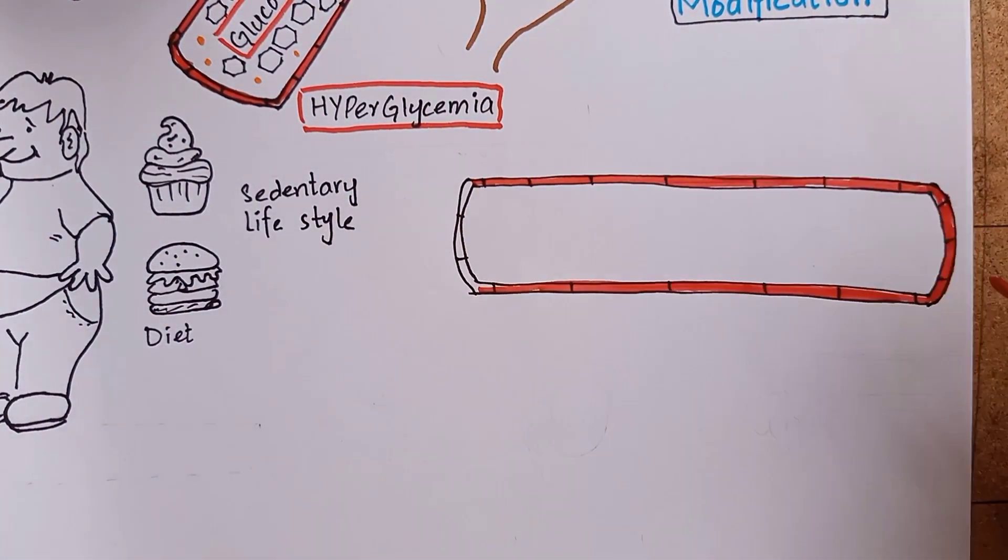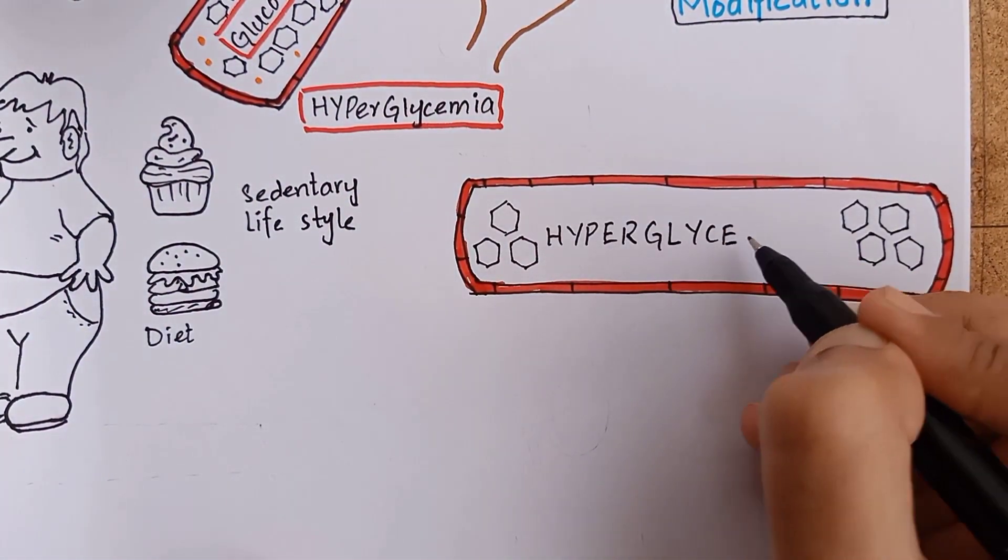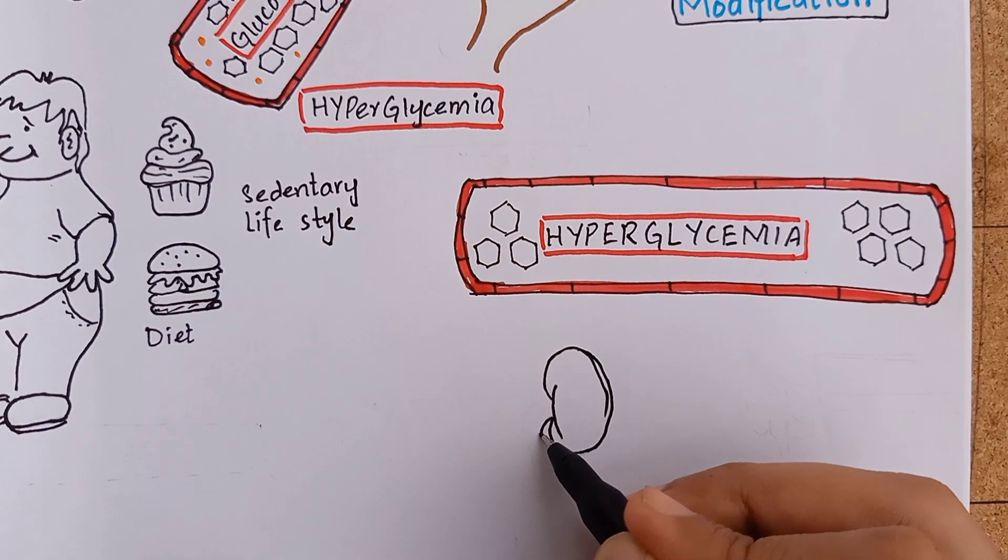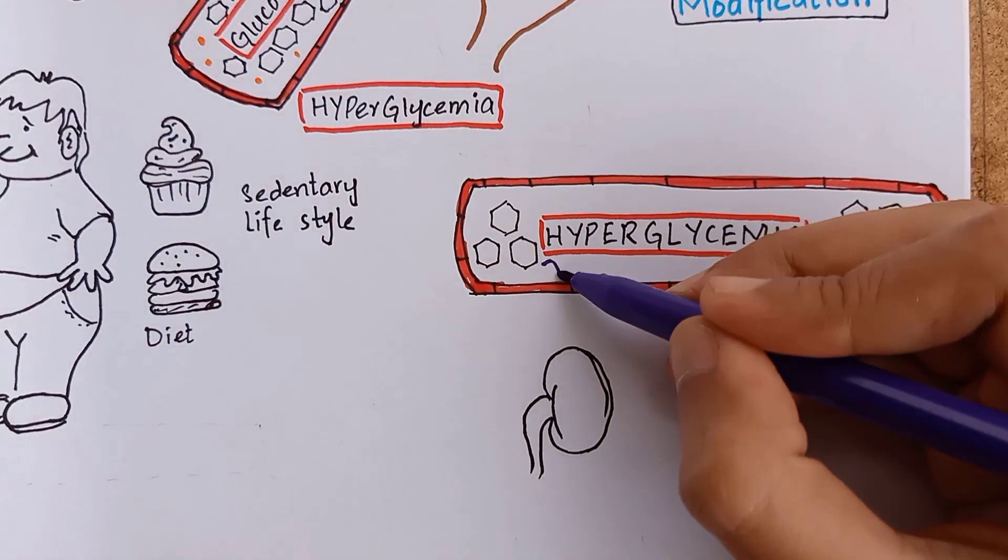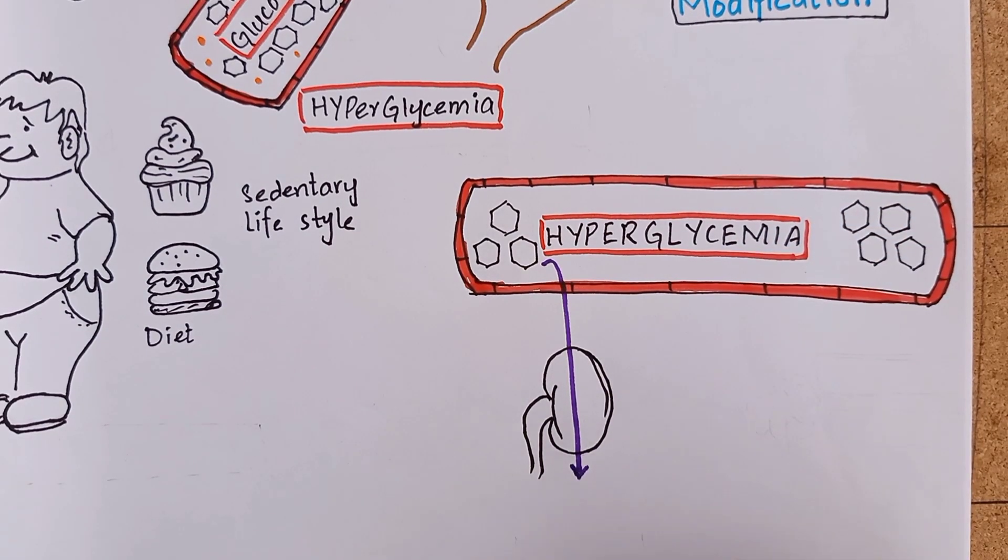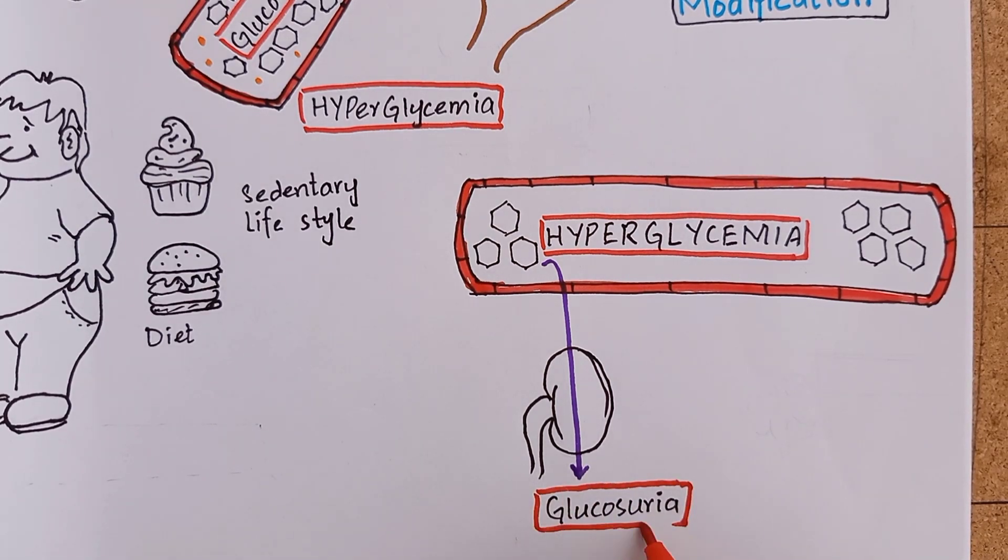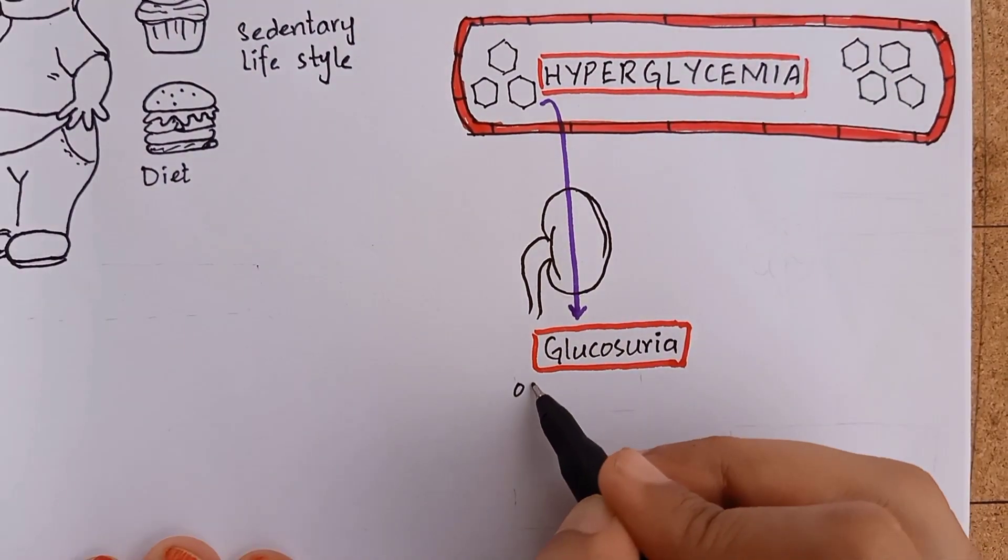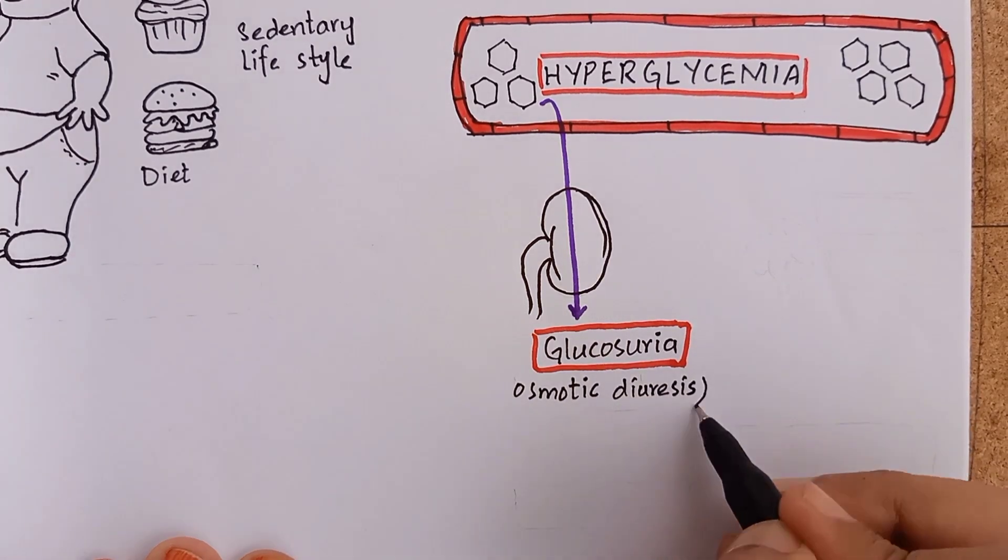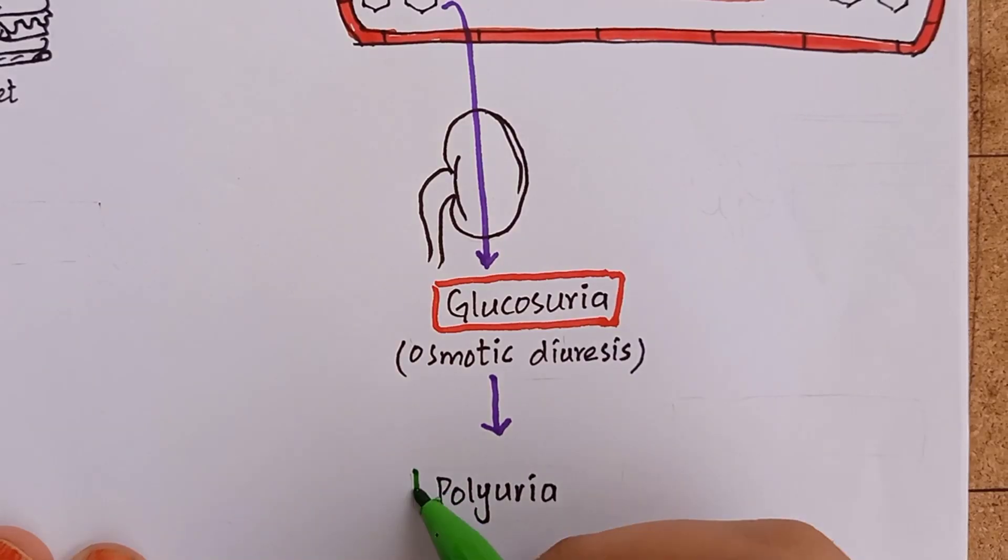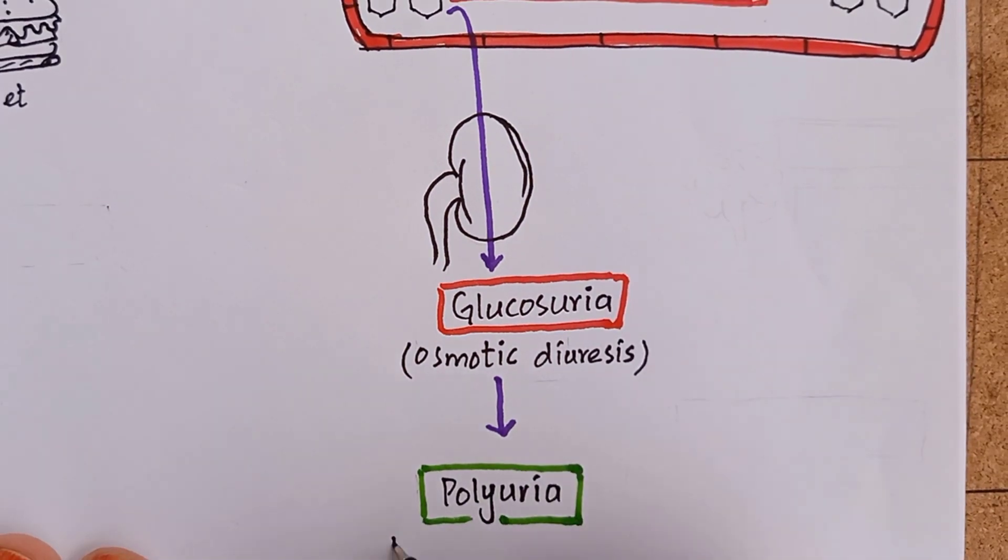In both type 1 and type 2 diabetes, persistent high blood glucose travels to the kidneys and is excreted out of the body. This is called glucose urea—glucose in urine. As glucose is a solute, it will take more water to dissolve in it, so the person will eventually excrete more water. That is called polyurea, excessive urination.